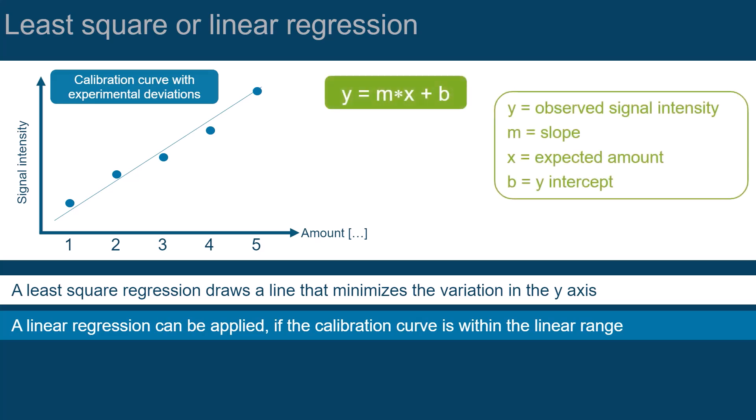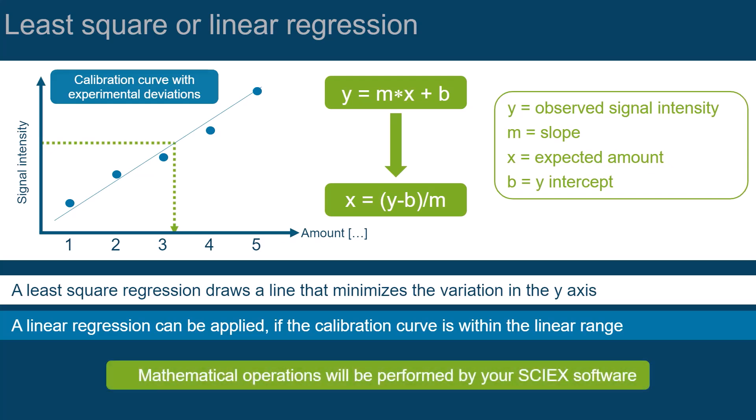The line can then be described as this mathematical function, which contains the slope and the y-intercept. You can easily rearrange the formula and calculate the unknown amount x from your calibration curve. Don't worry, all the mathematical operations will be performed by your SCIEX software, but it is important for you to understand the general concept.